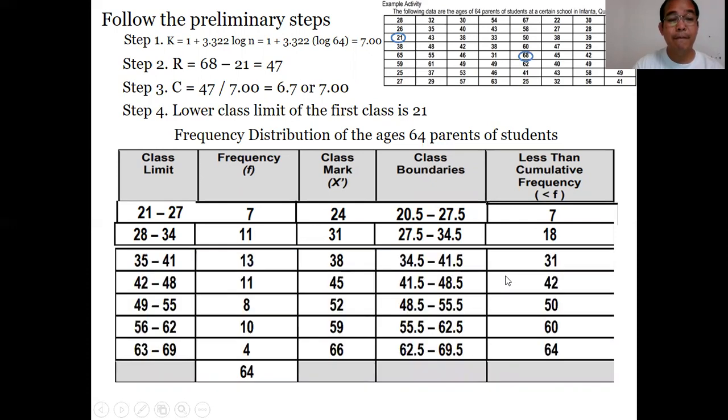Let's proceed. After 34 comes 35. So 35 plus 6 equals 41. Then count how many numbers fall from 35 to 41: there are 13. The class mark is 35 plus 41 divided by 2, which equals 38. Same process for class boundaries: 34.5 to 41.5. And the cumulative frequency is 18 plus 13 equals 31. Then just continue the process.